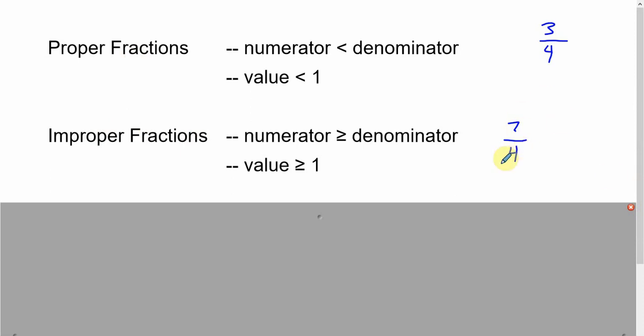So a number like 7 fourths is really, if we have one whole thing and we divide it into fourths, that one whole is 4 fourths. So we actually need to go to a second whole, so we've got four fourths and then three more to make seven. That's what seven fourths looks like.